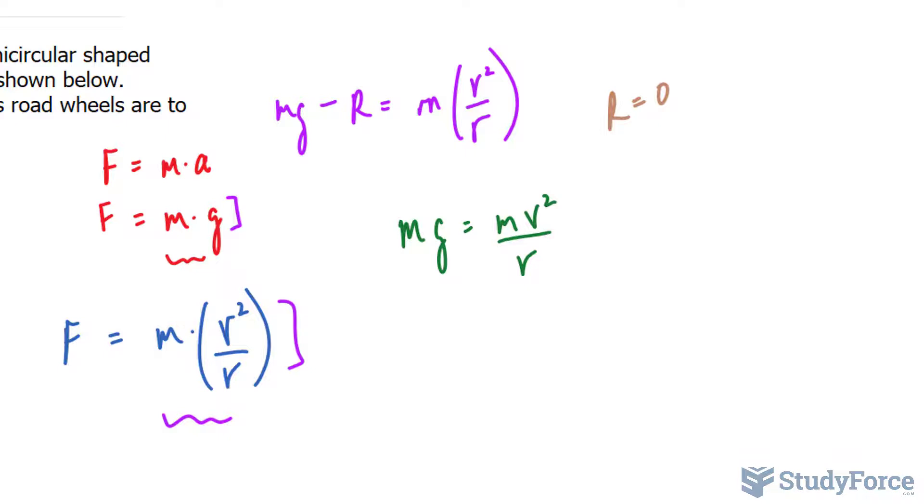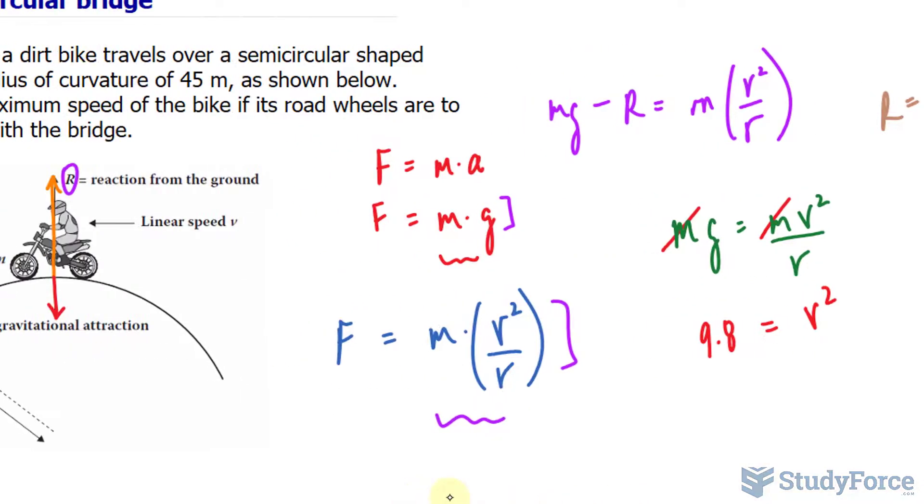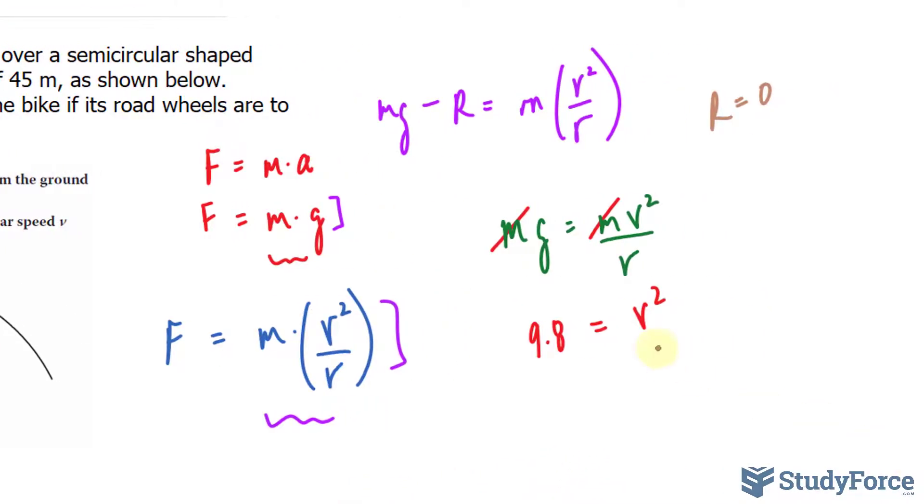If we solve for v, these two m's, given that they are factors on both sides of this equation, will cancel out. Just pretend that we divided both sides by m, they would cancel out. g can be replaced with 9.8 meters per second squared. v is what we're looking for, and r is 45 meters, which was given in the question.